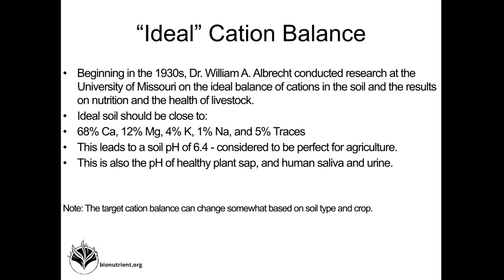Beginning in the 1930s, William Albrecht did a lot of research on animal nutrition and health. His results basically showed that crops and foods fed to livestock resulted in the healthiest livestock when soil minerals approached a certain ratio: 68% calcium, 12% magnesium, 4% potassium, and 1% sodium. He went all over the world to figure out how to grow the healthiest livestock and crops, and found no counterpoints to this — the closer a soil resembled this, the better everything did.